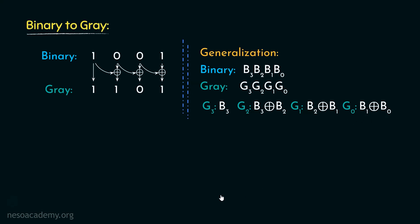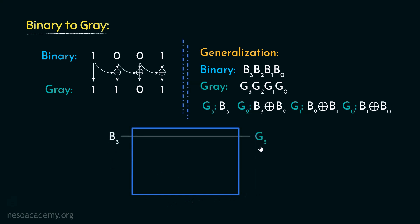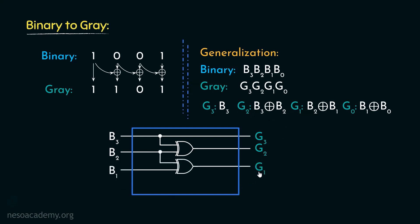Let's construct the binary to gray circuit. B3 is directly G3. XORing B3 with B2 gives G2. Similarly, XORing B2 with B1 gives G1, and XORing B1 with B0 gives G0. This is the circuit that converts a 4-bit binary number into its equivalent gray code.